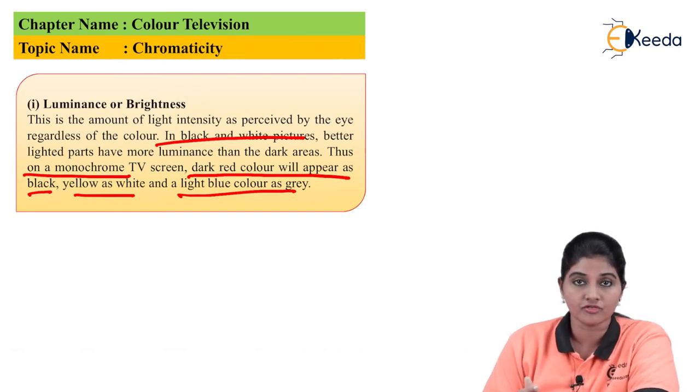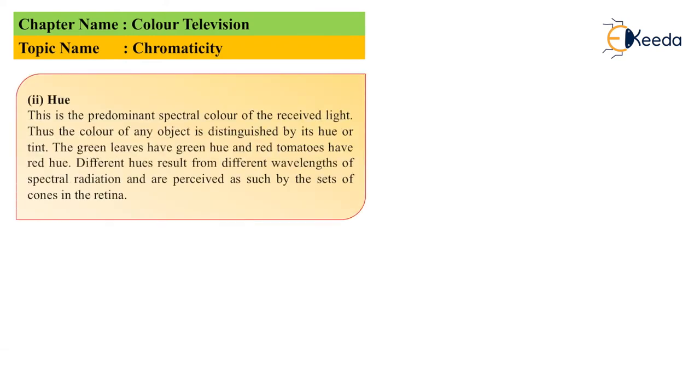The next characteristic is hue or tint. It is the predominant spectral color of the received light. Therefore, the color of any object is distinguished by its hue or tint. The green leaves have green hue, red tomatoes have red hue. Different hues result from different wavelengths of spectral radiation and are perceived by the set of cones in the retina.